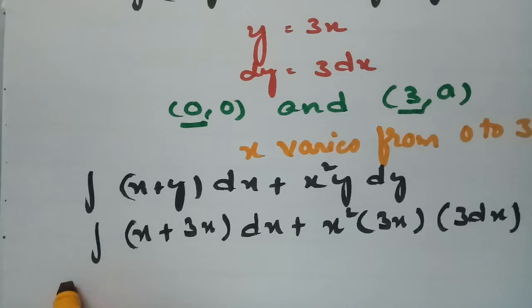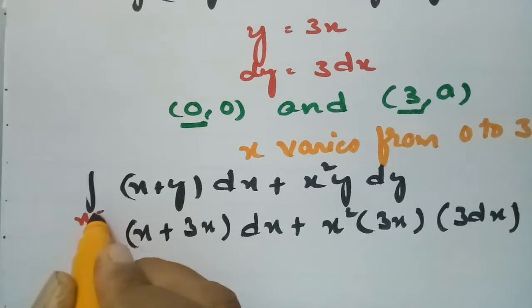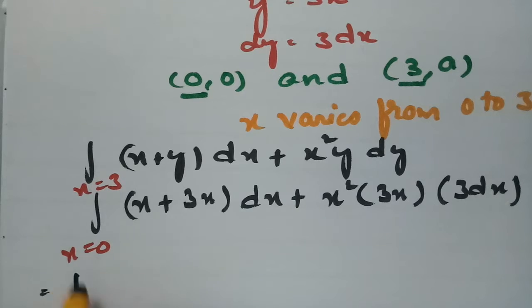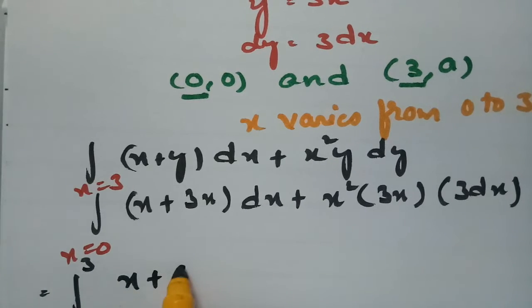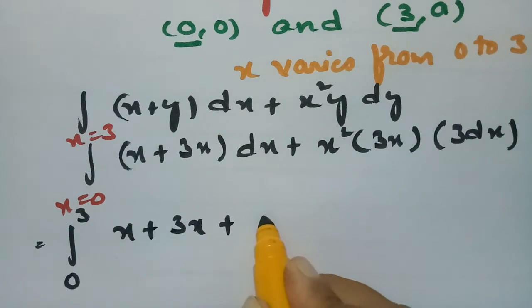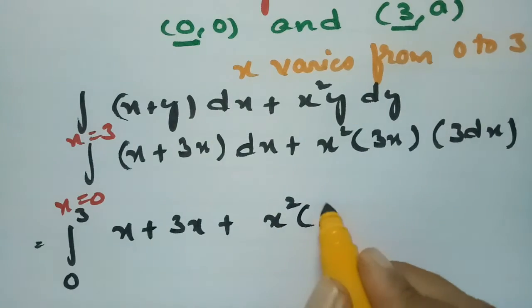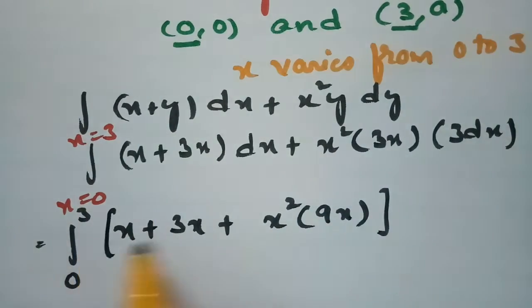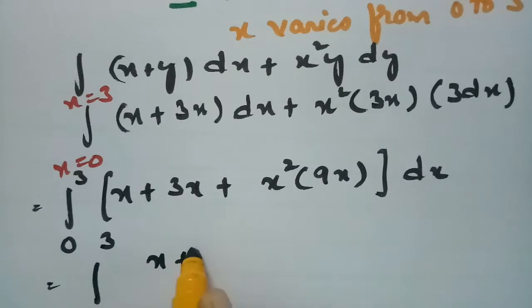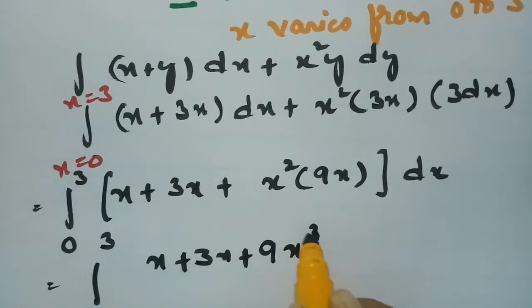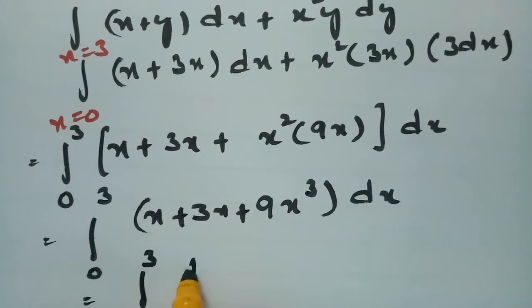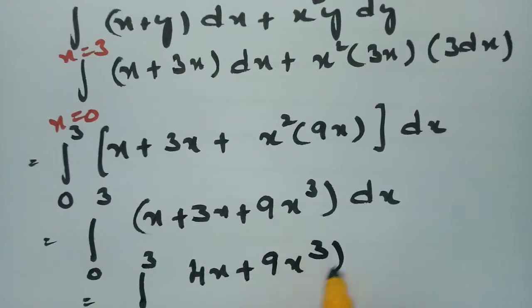The x limits are from 0 to 3. After calculation, this becomes x + 3x plus x² × 3x × 3, which gives 9x³. So the integral becomes the integral from 0 to 3 of (x + 3x + 9x³)dx, which equals the integral from 0 to 3 of (4x + 9x³)dx.